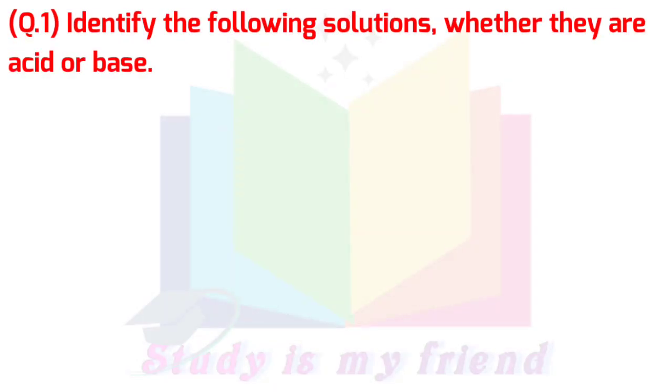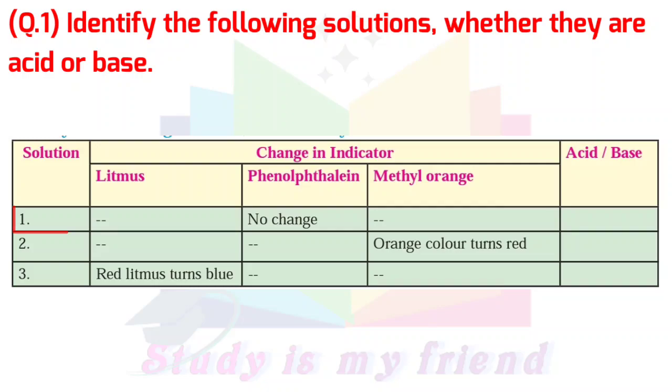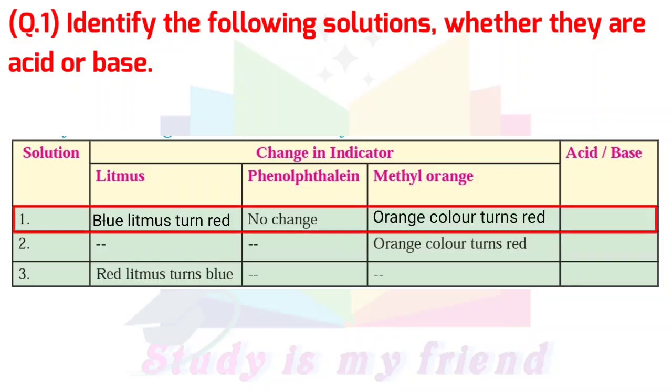Question 1: Identify the following solution, whether they are acid or base. Answer: Solution 1 - Blue litmus turns red, phenolphthalein shows no change, methyl orange turns red. This is an acid.